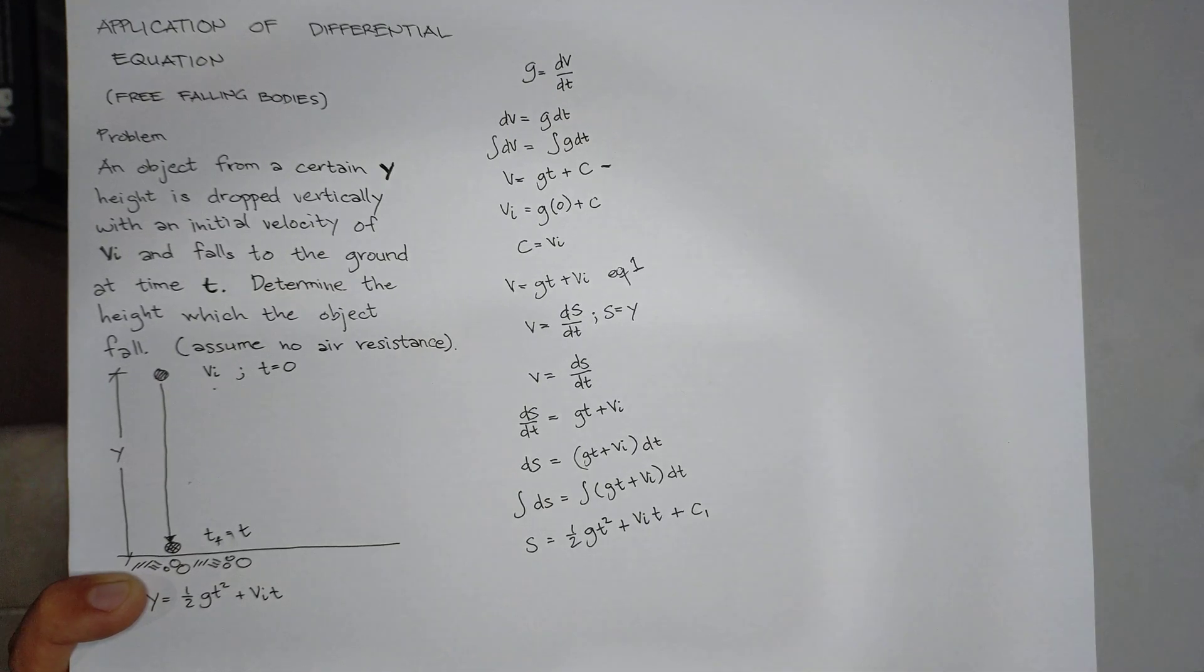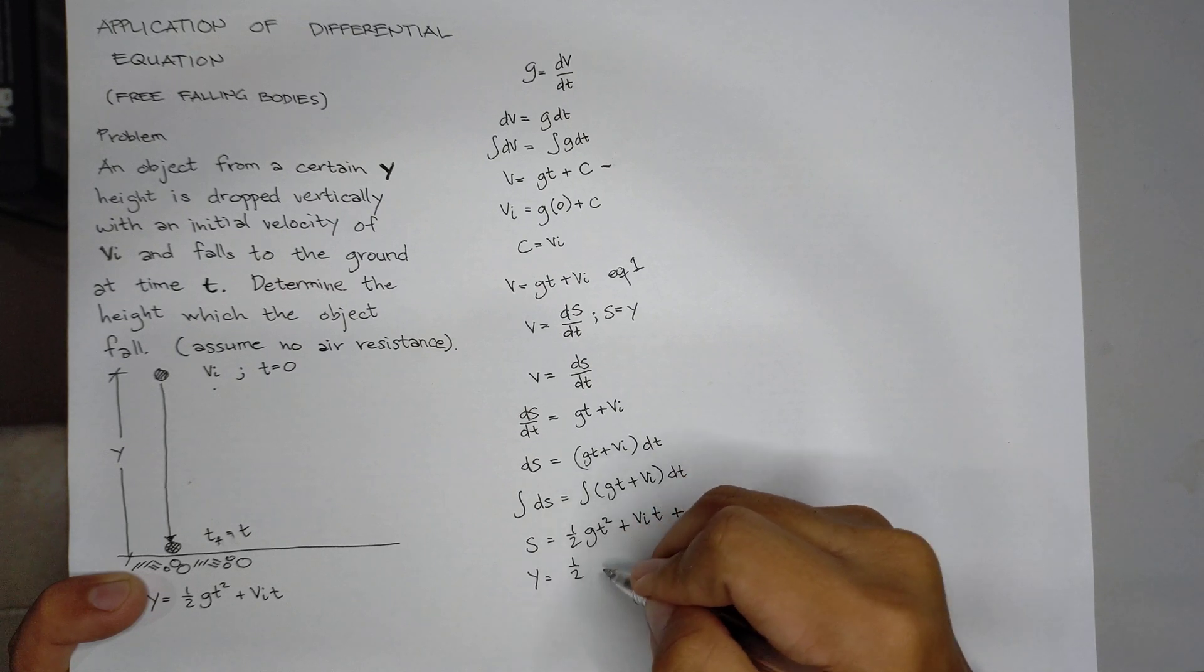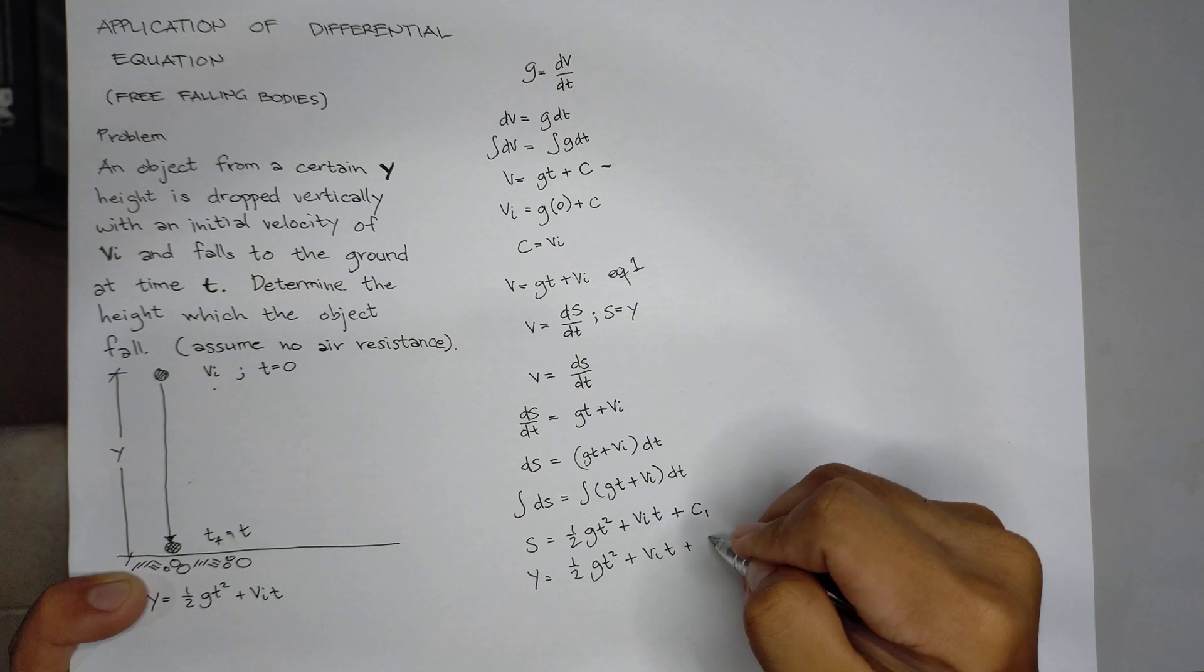Let's call c1. But s here is y. y is equal to 1/2 g t² plus vi times dt plus c1.